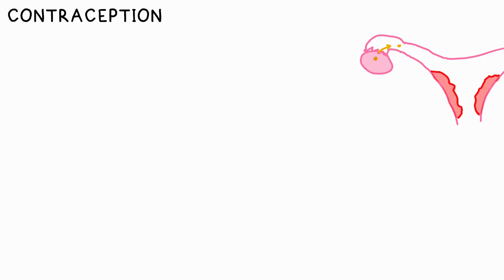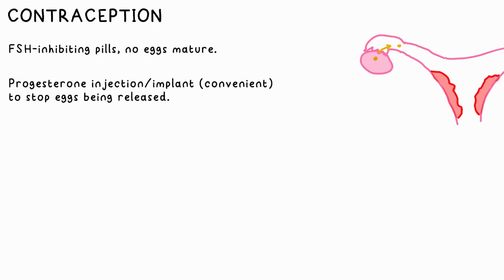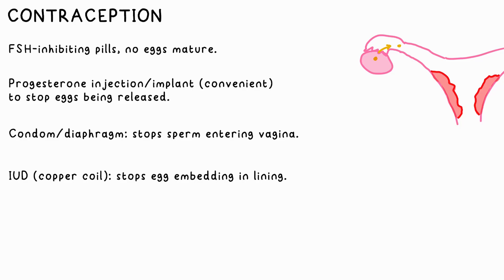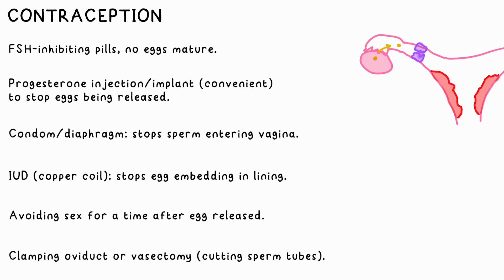This is great news if you're looking to get pregnant. If not, you need to find some way of stopping a sperm cell from meeting an egg cell. Contraception options include pills that inhibit FSH production so no eggs mature, progesterone injections that stop any eggs from being released, or you can have an implant that slowly releases this over months or years. Condoms for men and diaphragms for women are simple barriers to stop sperm from reaching an egg. An IUD — an intrauterine device like a copper coil — prevents a fertilized egg from implanting in the lining. You could also simply avoid sex for some time after the egg is released, as that's when it travels slowly down the oviduct where a sperm can meet it. Clamping the oviducts — sometimes referred to as having your tubes tied — or cutting the sperm ducts will obviously stop the cells from meeting.